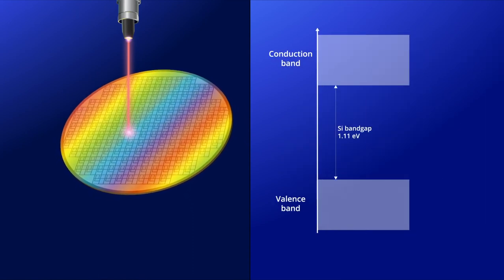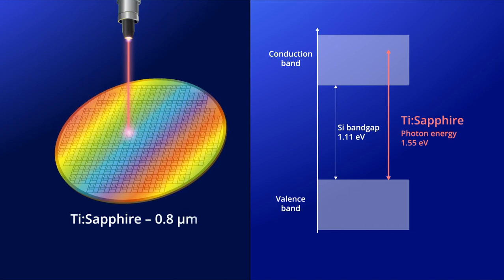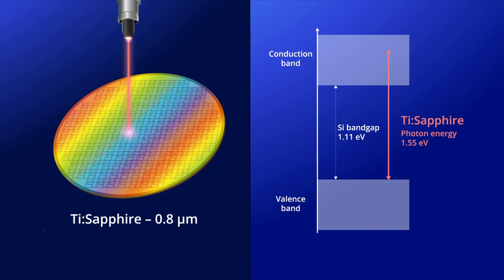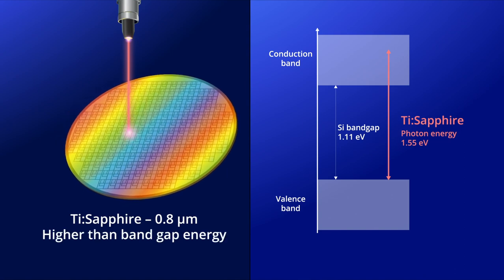First, they used a conventional titanium sapphire laser system with pulses at 0.8 microns to structure the silicon at higher than bandgap energy.